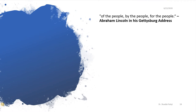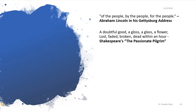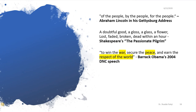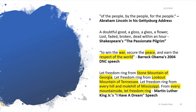Now we move on to the next figure of speech. It's there in our Constitution's preamble as well: 'of the people, by the people, and for the people,' first given by Abraham Lincoln. From Shakespeare's 'The Passionate Pilgrim': 'a doubtful wood, a gloss, a glass, a flower lost, faded, broken, dead within an hour.' Barack Obama's speech when he was fighting for the presidential seat: 'To win the war, secure the peace, and earn the respect of the world.'